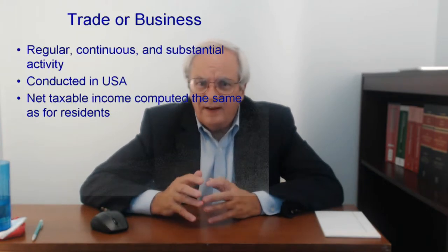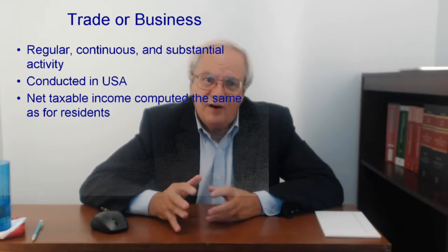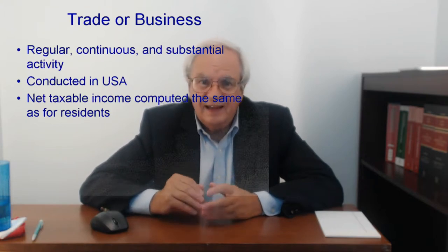The other key requirement is that the business must be conducted at least in part in the US — again based on facts and circumstances. For information on how states tax business, see the book 'Income Tax in the USA,' which has an appendix covering allocation and apportionment for the states.